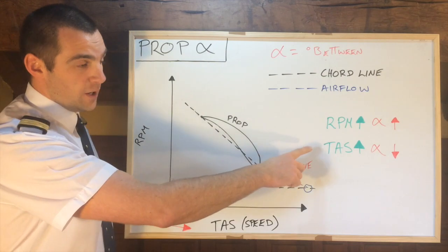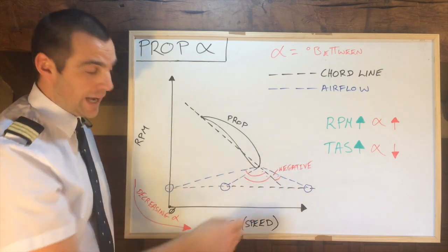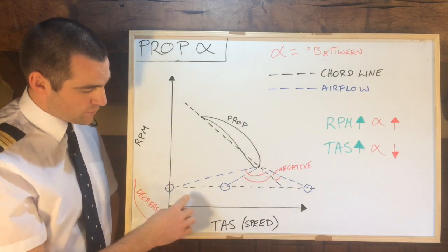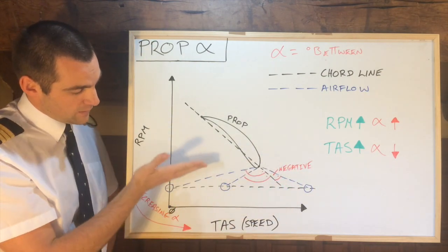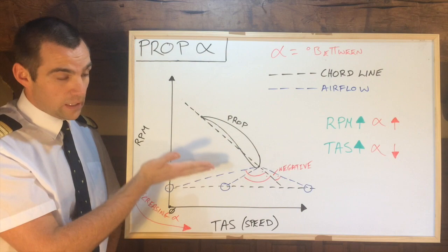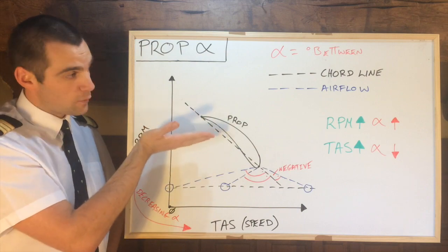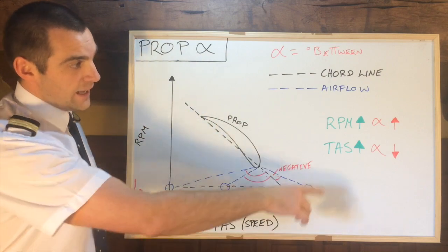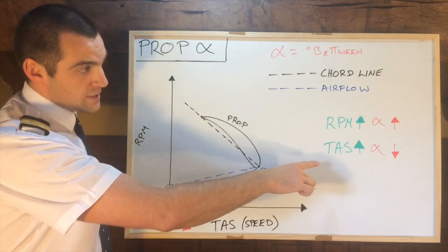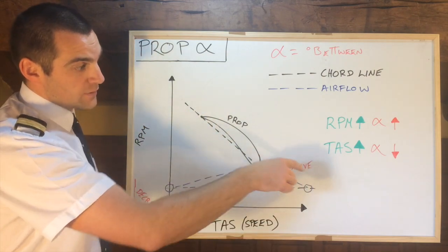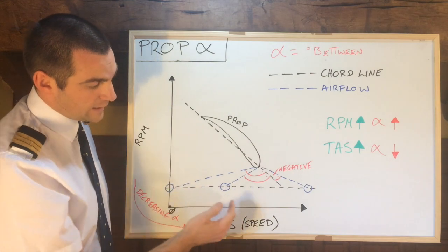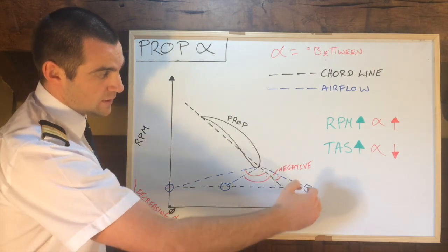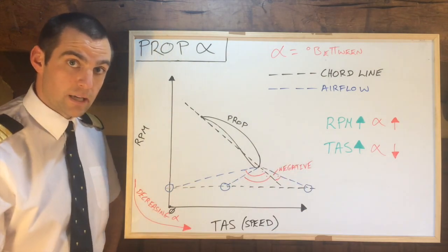So to sum up: if RPM is increasing, angle of attack is also increasing, as that angle is getting bigger, pulling the line down towards this way. And if TAS is increasing, the angle of attack will be decreasing, as it's pulling the line in the other direction, until it will eventually become negative.